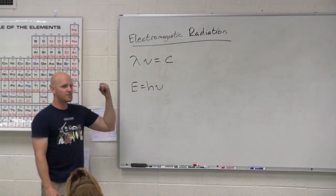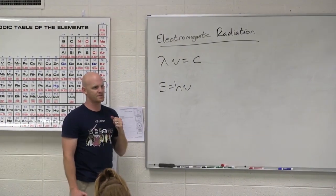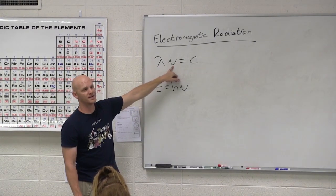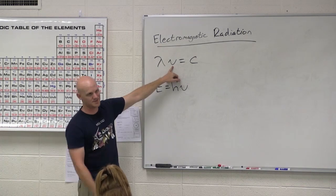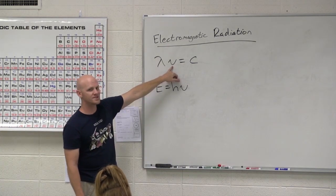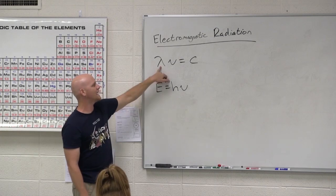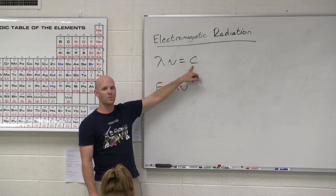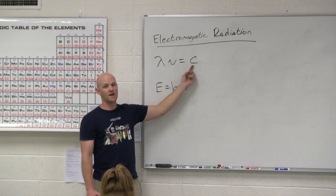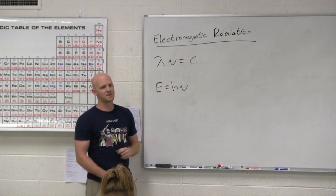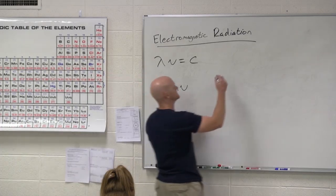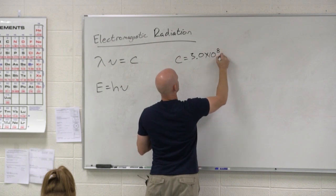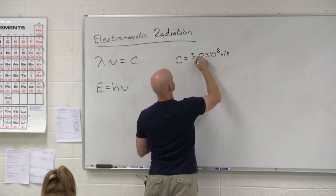It turns out we've got frequency and wavelength for electromagnetic radiation. The frequency, which we call nu here in chemistry, sometimes we use F in physics classes. The Greek letter nu, this is not the letter V. And then lambda here. The wavelength of any wave times the frequency of any wave will always equal the speed of that wave. In this case, the speed of light. What's the speed of light? We're going to round it to 3.0 times 10 to the eighth meters per second.